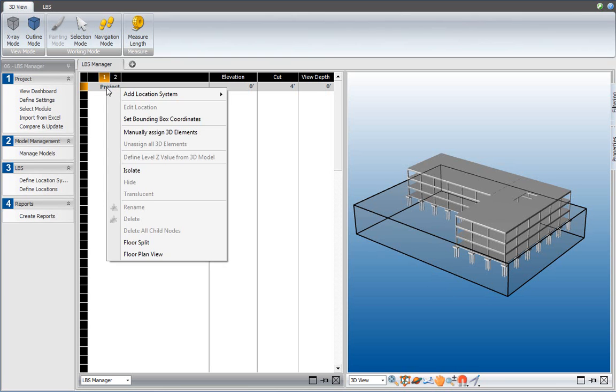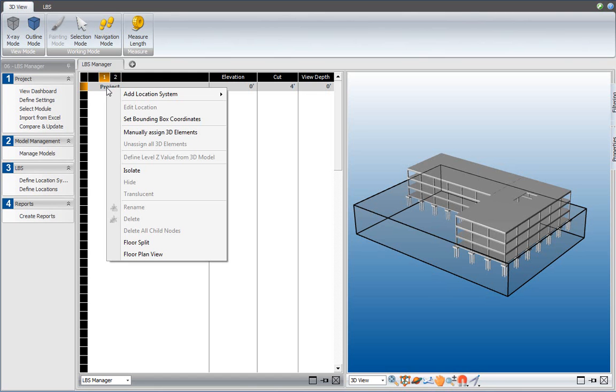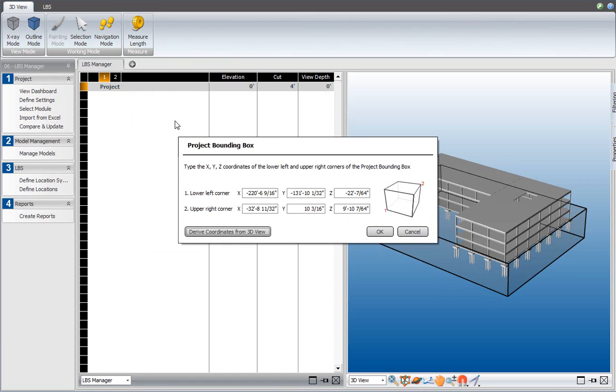To do that, I right-click on the project node and select Set Bounding Box Coordinates. In here, I can then manually type the values that I would like to use, maybe 30 feet.